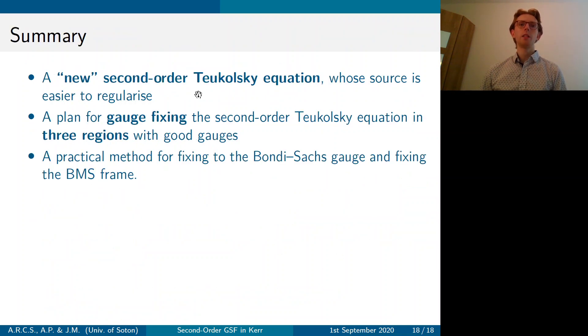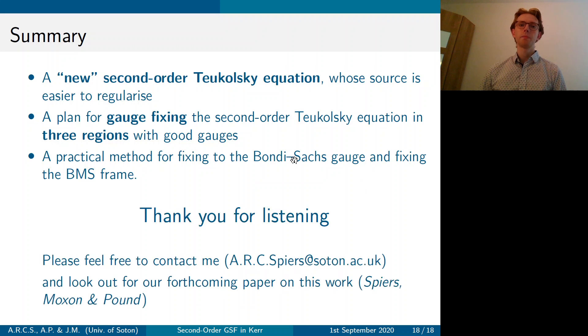So in summary, today I've discussed a new form of the second order Teukolsky equation whose source we can make regular in the highly regular gauge. I've discussed our plan for gauge fixing this Teukolsky equation in three physically significant regions for EMRIs in good gauges and given a practical method for fixing to a good gauge at scri plus, the Bondi-Sachs gauge, and also fixing the residual freedom, the BMS frame. Thank you very much for listening. I'd be happy to hear any questions and also please feel free to contact me and look out for our forthcoming paper. Thank you very much.